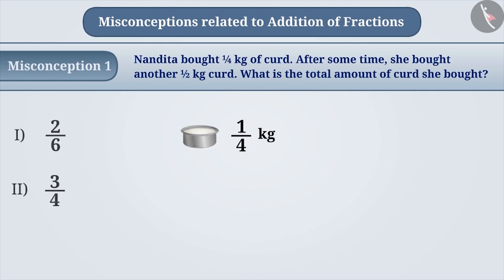Nandita bought 1/4 kg of curd and later she bought 1/2 kg of curd. To find the total amount of curd, we have to add 1/4 and 1/2. Sometimes, addition of fractions is not understood properly.